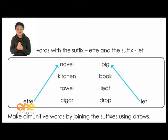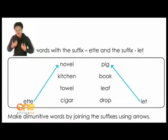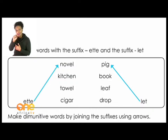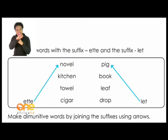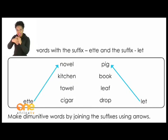On page four we have diminutive words with the suffix '-et' and '-let'. Examples include: novel/novelette, kitchen/kitchenette, towel/towelette, cigar/cigarette. On the other side we have: pig/piglet, book/booklet, leaf/leaflet, and lastly drop/droplet.